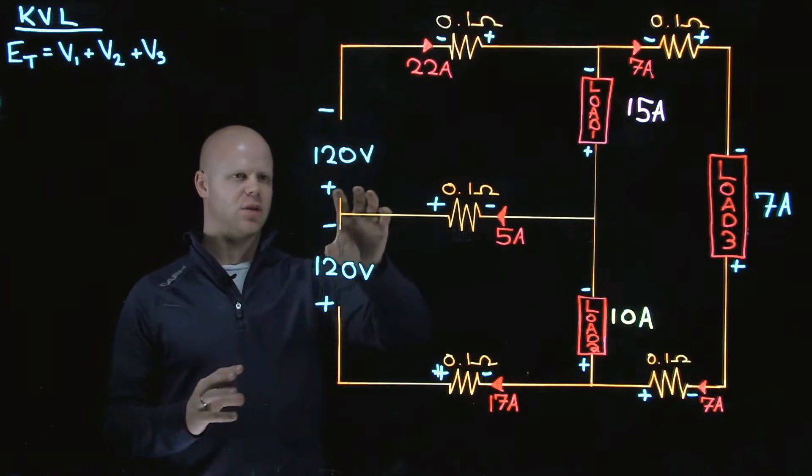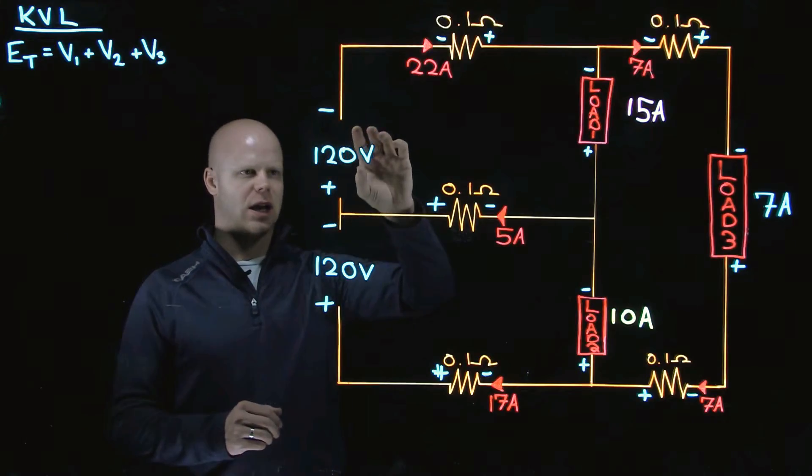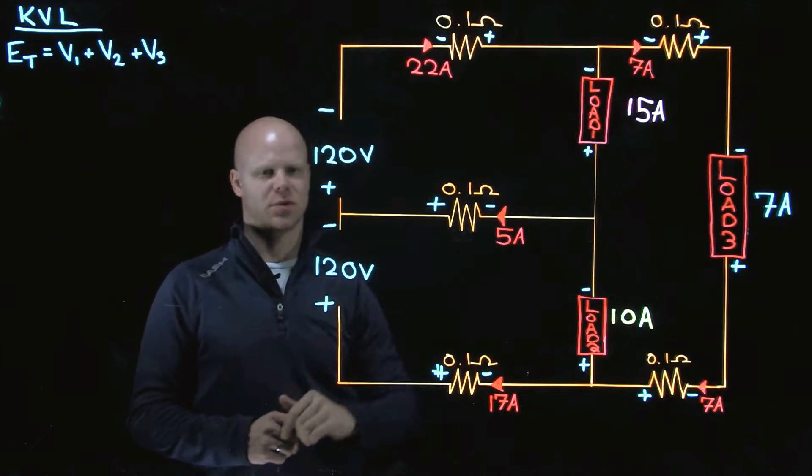Another way of saying it is that the voltage rise of my circuit or my source voltage has to equal all of the voltage drops within my circuit.